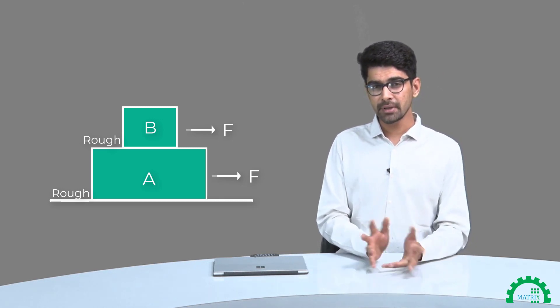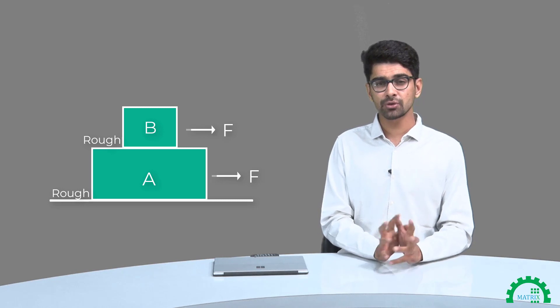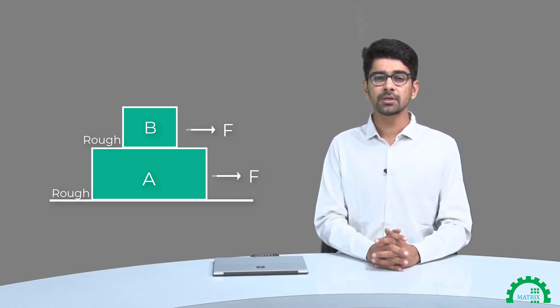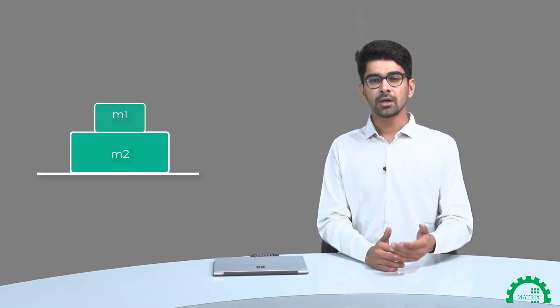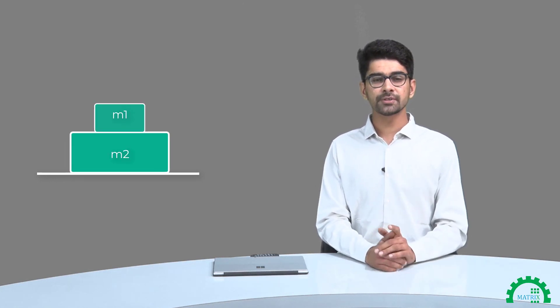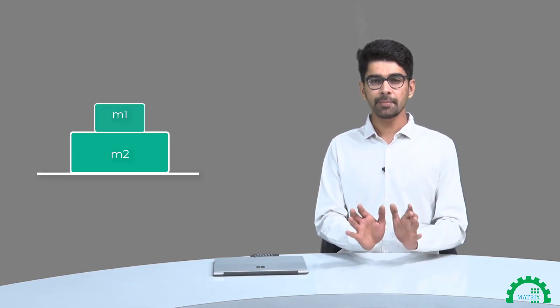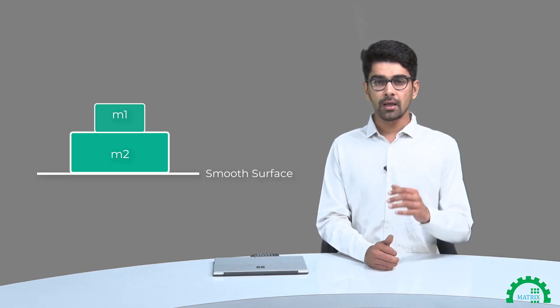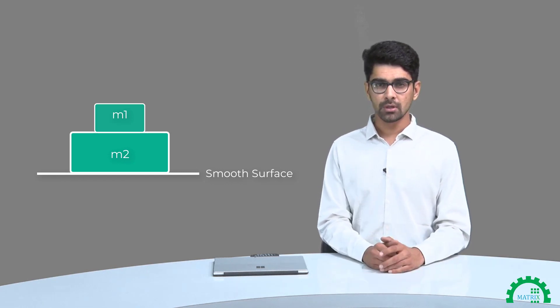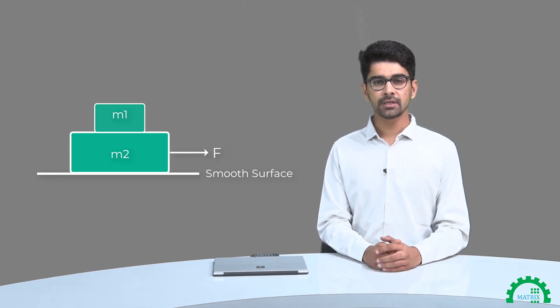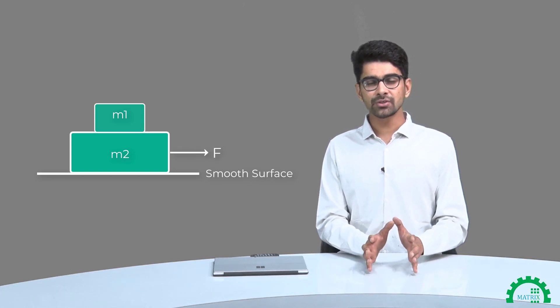So the situation may change a bit, but overall the approach and the concept to solve these questions will still be the same. Let's take a very simple example to discuss all this. In this example we'll take two blocks M1 and M2, and we'll keep these blocks on a smooth surface. For now let's keep it simple — there's an external force applied on M2, and M1 is kept on top of it.